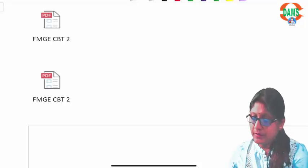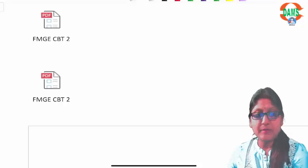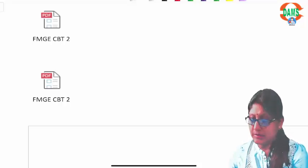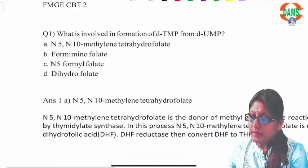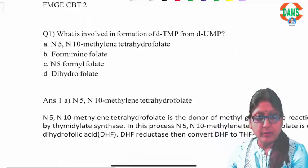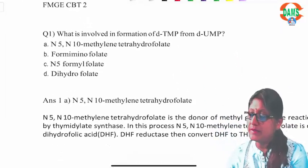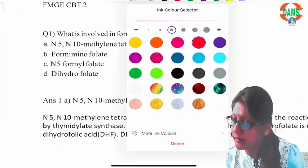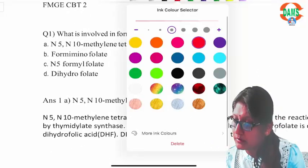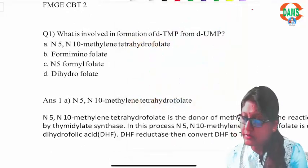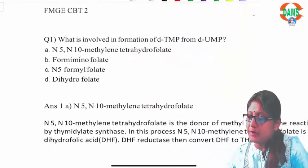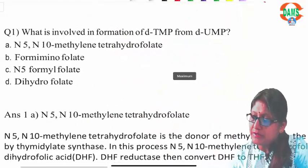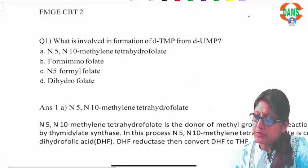Welcome everybody, this is the biochemistry recording for FMGE CBT2. There are a total of 15 questions and I will be discussing them one by one. The very first question is talking about the formation of deoxy-TMP from deoxy-UMP.